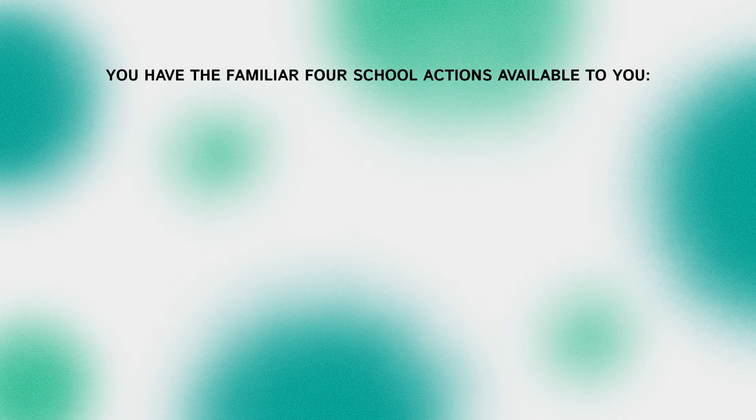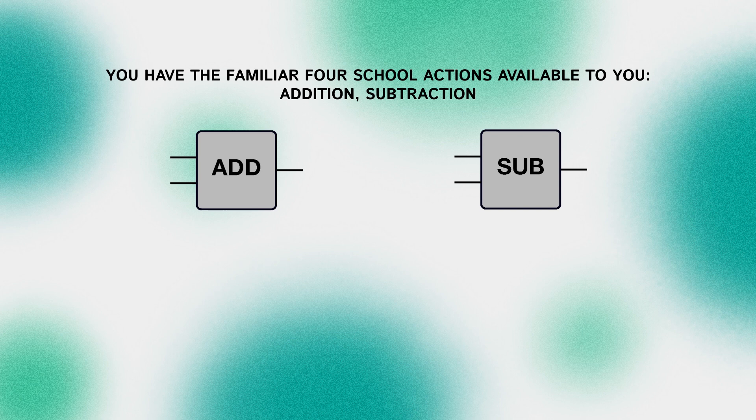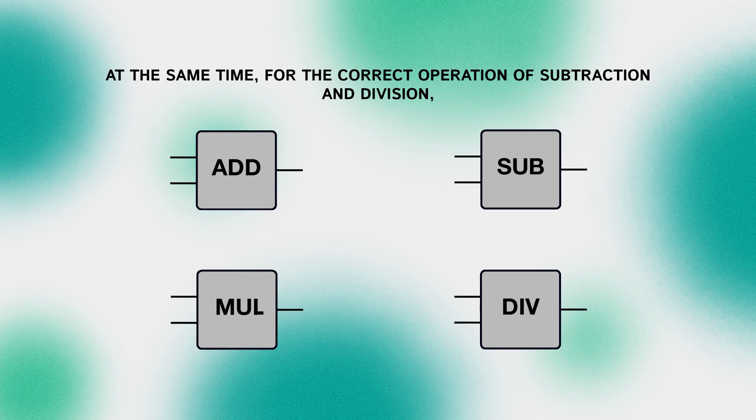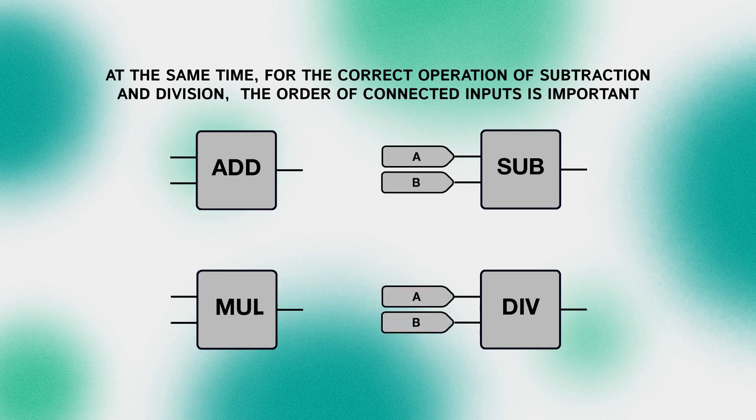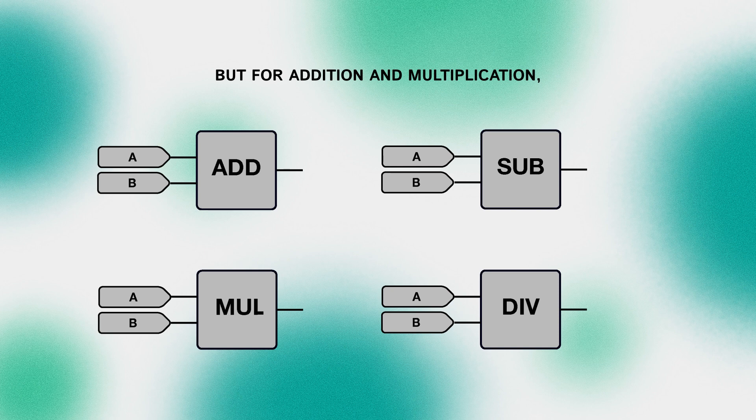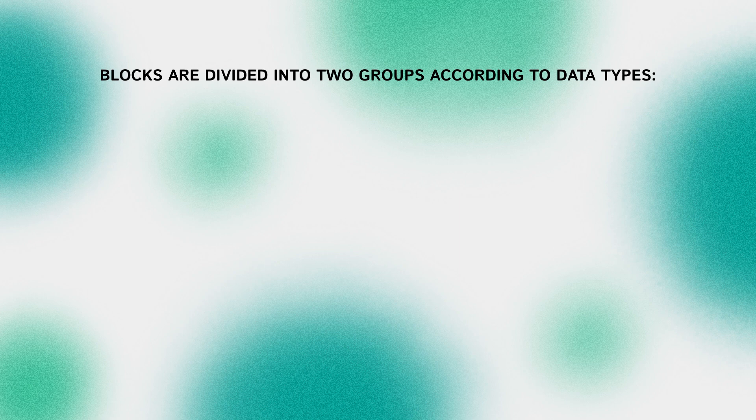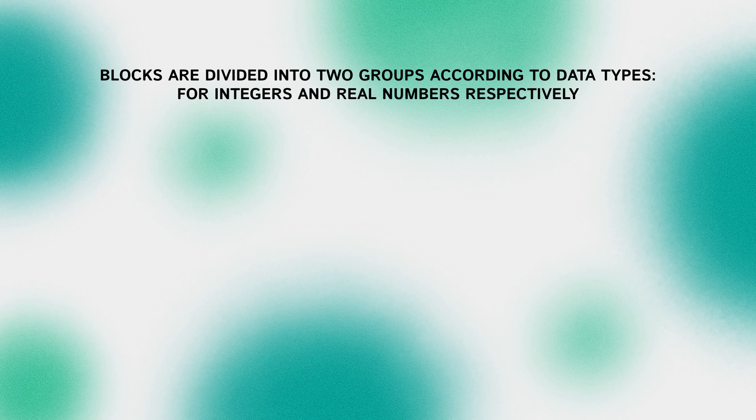You have the familiar 4 school actions available to you: addition, subtraction, multiplication and division. At the same time for the correct operation of subtraction and division the order of connected inputs is important. But for addition and multiplication the order of the inputs connected doesn't matter. Blocks are divided into two groups according to data types, for integers and real numbers respectively.